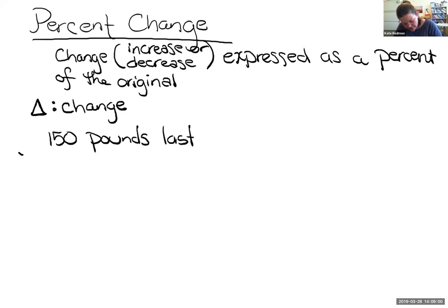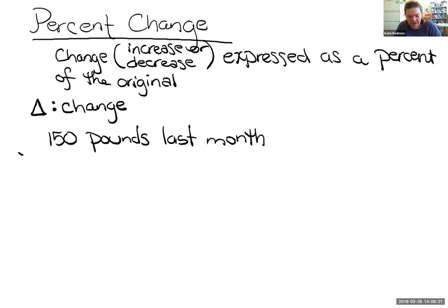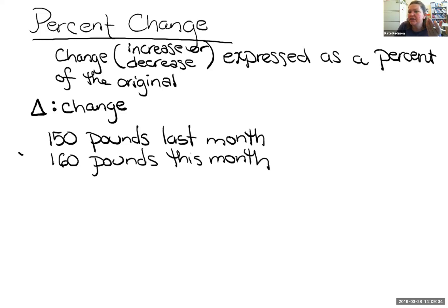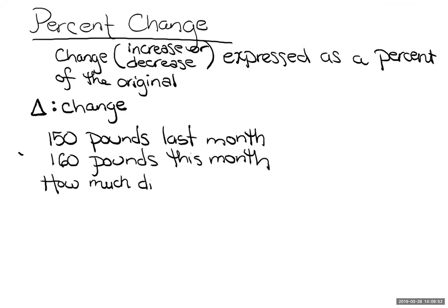Let's pretend my weight changed. I probably ate too many peanut butter cups. So if I weighed 150 pounds last month and now this month I weigh 160 pounds, those are starting and ending weights but they're not the change. How could I figure out how much my weight changed? It changed by 10 pounds — absolutely right. It totally changed by 10 pounds.